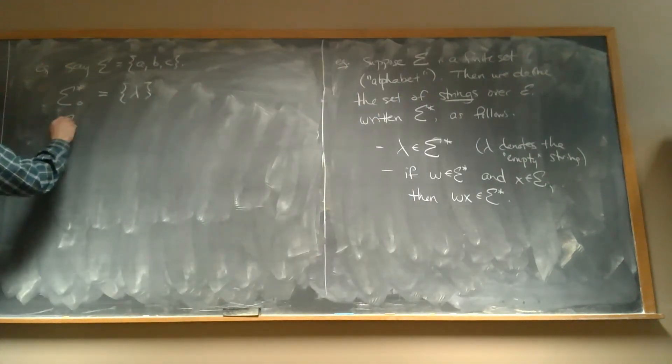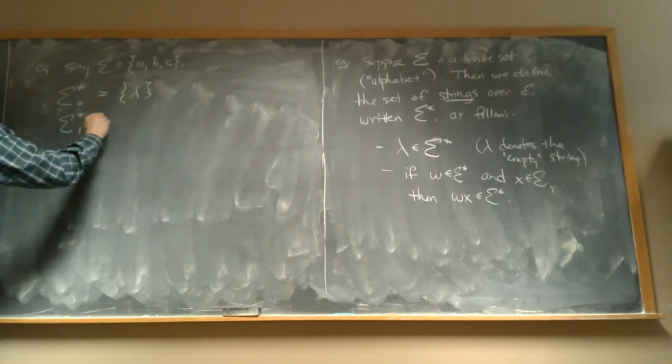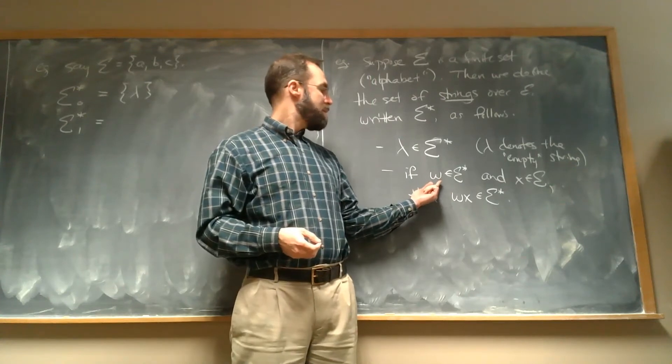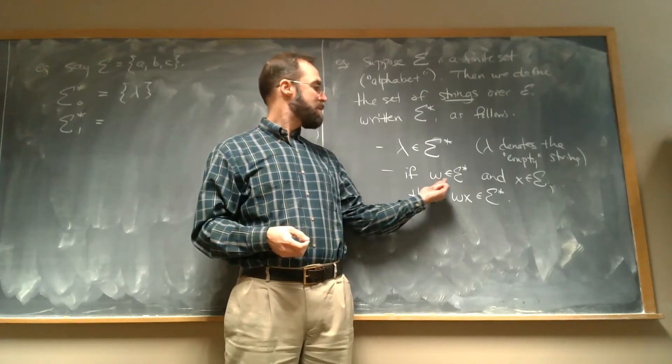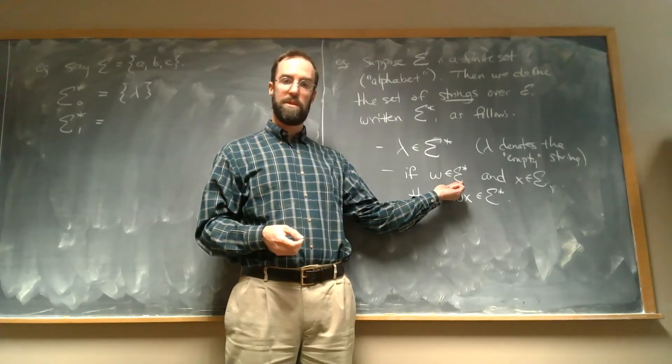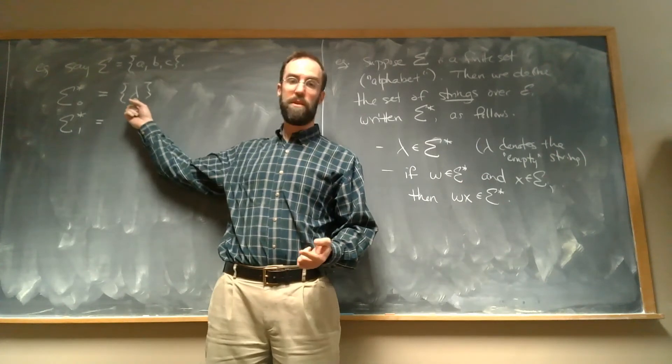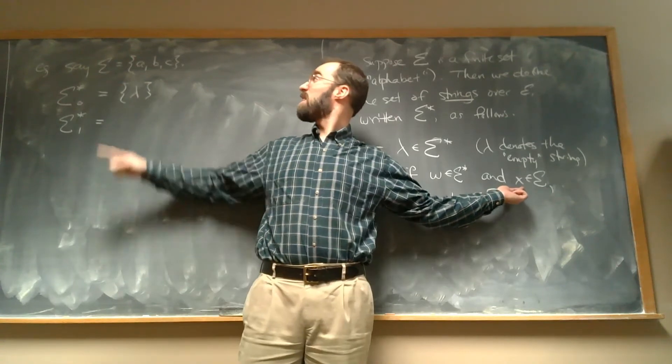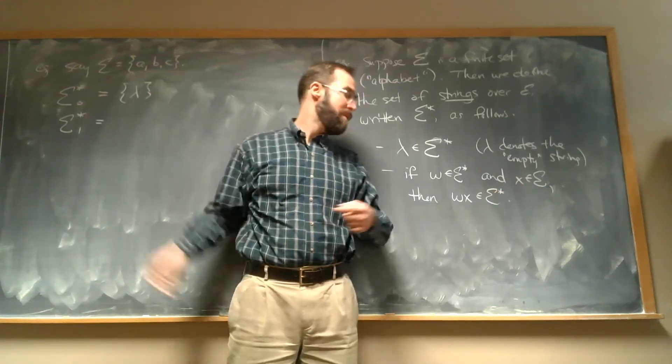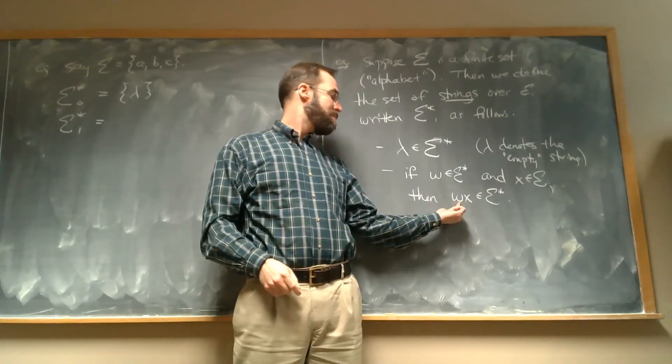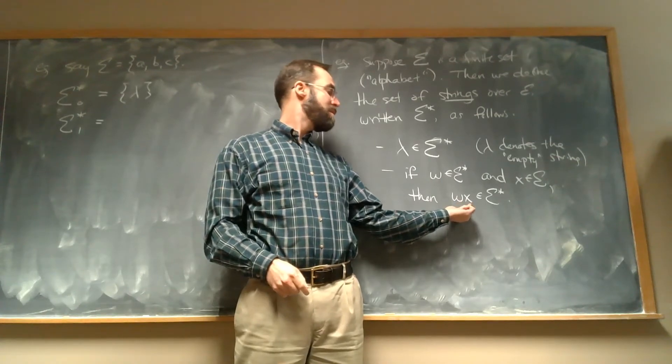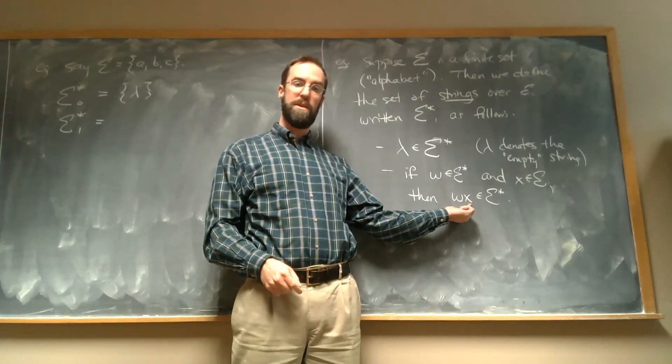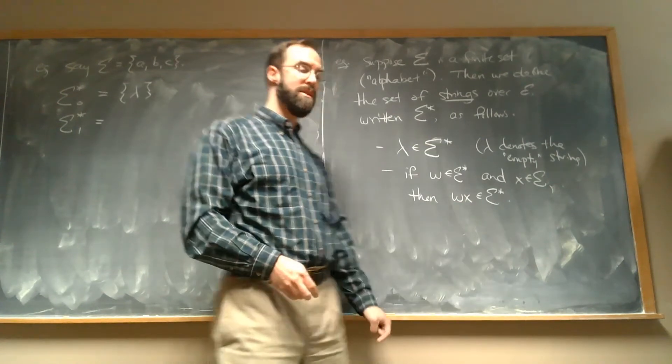First step, for stage one, well, let's think about this. This says, for anything that's already in our set sigma star, which the only thing we have so far is lambda, and then for anything in our alphabet, that could be a, b, or c, we're going to take that thing, in this case lambda, and glue it on to whatever the letter in our alphabet is, and that thing is going to go back in our set, sigma star.